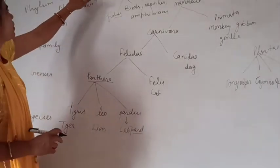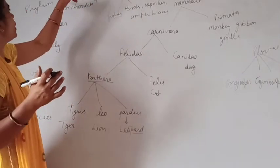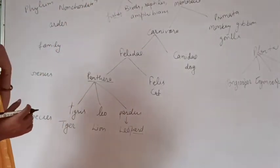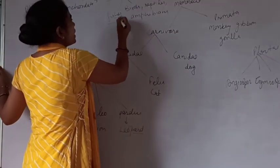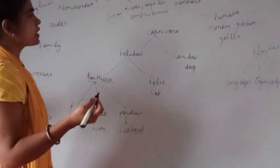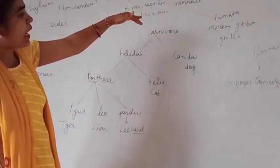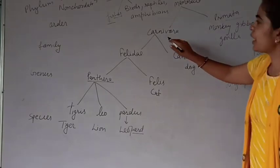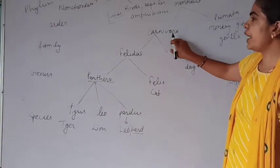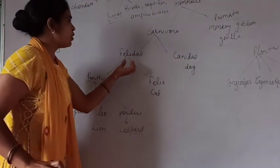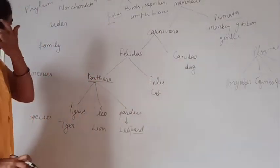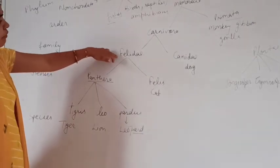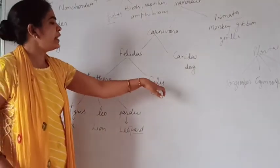Kingdom Animalia includes about 10 or 11 phyla, one of which is Chordata. The phylum Chordata includes different classes like fishes, amphibians, birds, reptiles, and mammals. Class Mammalia includes different orders such as Carnivora and Primata. Order Carnivora includes different families, and within the family Felidae there are two genera: Panthera and Felis.